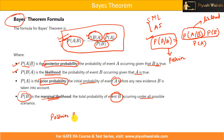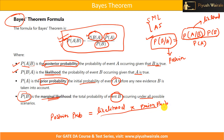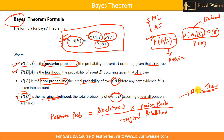So to summarize: posterior probability equals likelihood into prior probability, divided by marginal likelihood. This is the Bayes theorem expressed using these terminologies. We will apply this in machine learning and in the uncertainty reasoning part of AI, so remember these terms well.